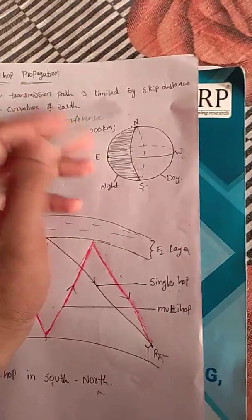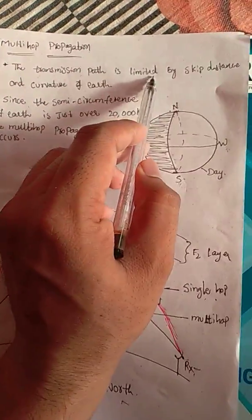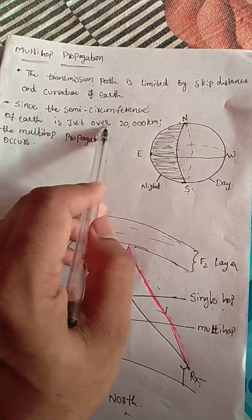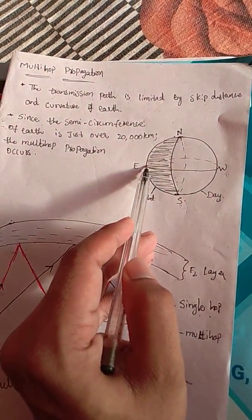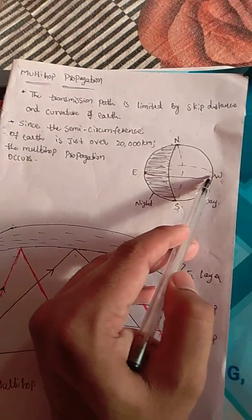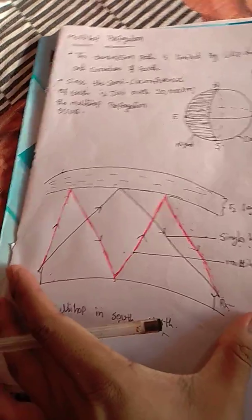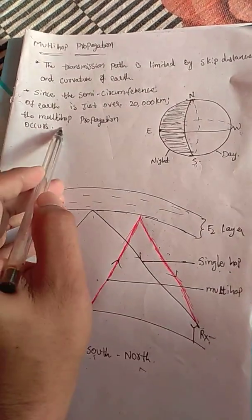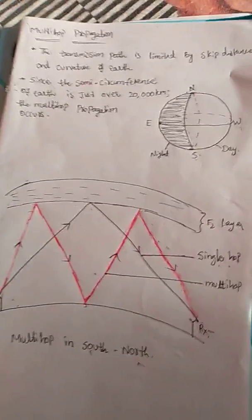For south-to-north propagation, the total path will be either all night or all day. The transmission path is limited by skip distance and the curvature of the earth. Since the semi-circumference of the earth is over 20,000 kilometers, multi-hop propagation occurs. For example, between Los Angeles on the east side and Wuhan on the west side, the signal propagates over a long distance, and multi-hop propagation will occur there.